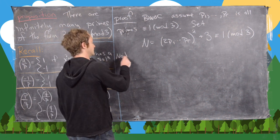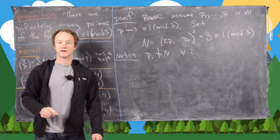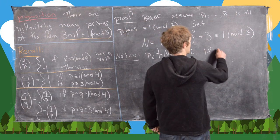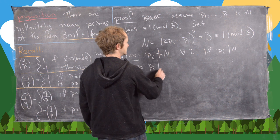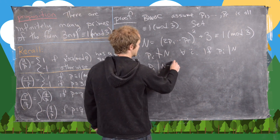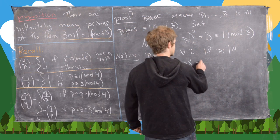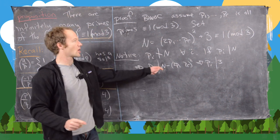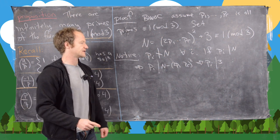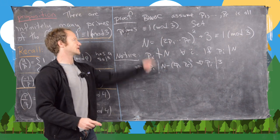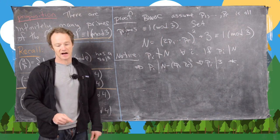Notice that pi does not divide N for any i from 1 to r. If pi did divide N, then pi would divide N minus 2p1·...·pr squared, which means pi divides 3. But pi is of the form 1 mod 3, and the only divisors of 3 are 1 and 3. So pi equals 1, meaning it's not prime, or pi equals 3, meaning it's not of this type. Either way we get a contradiction, so none of the pi divide N.